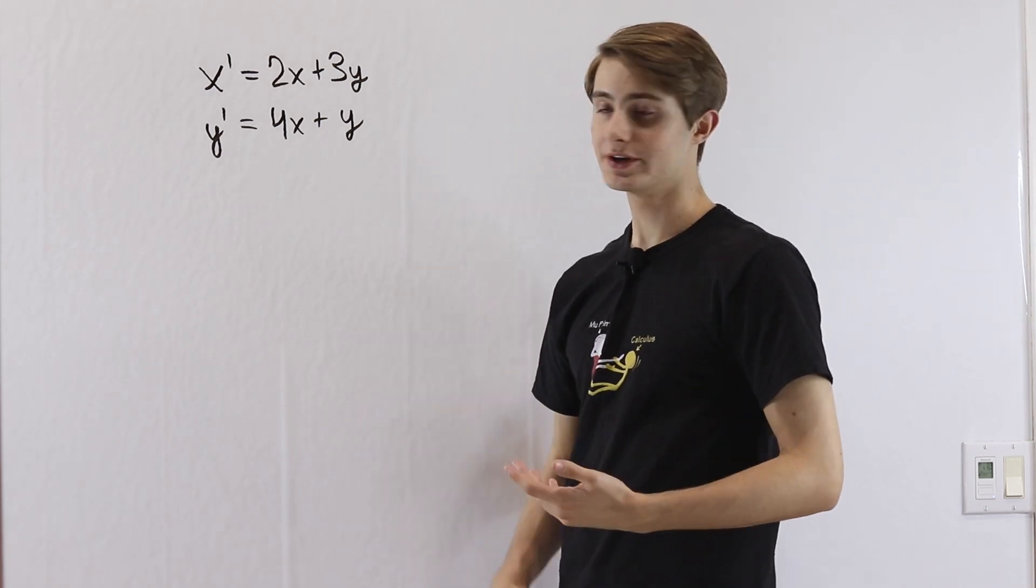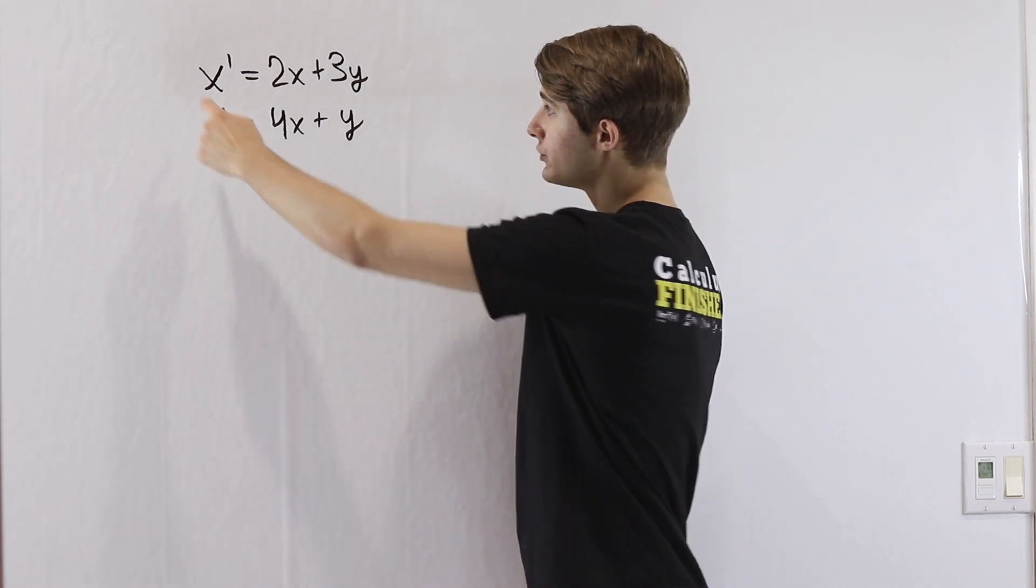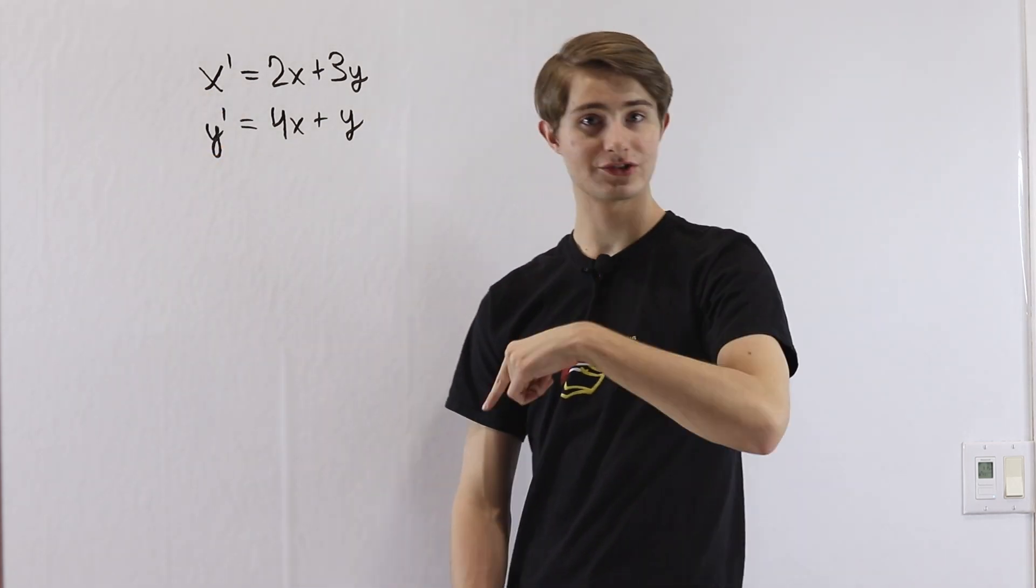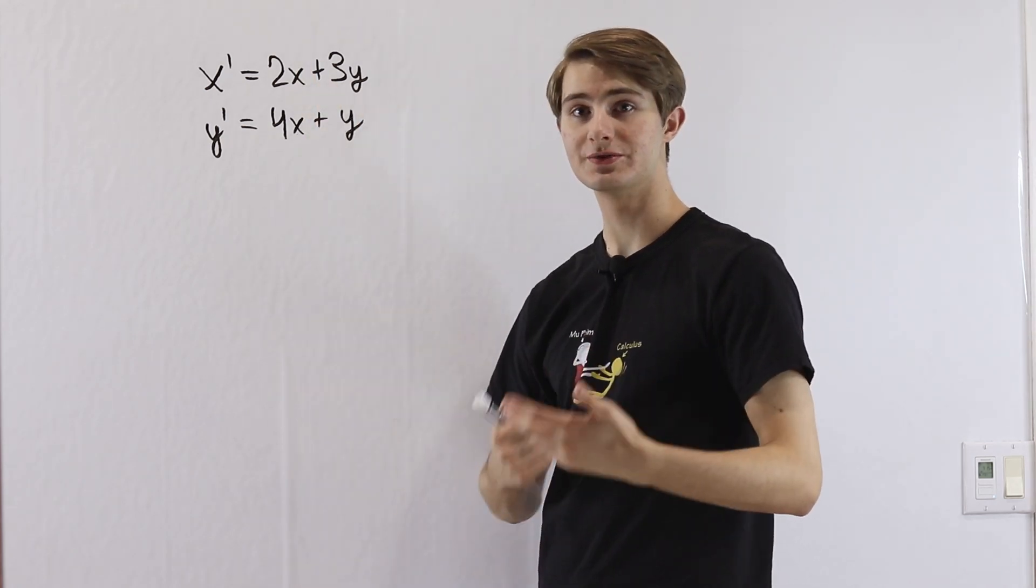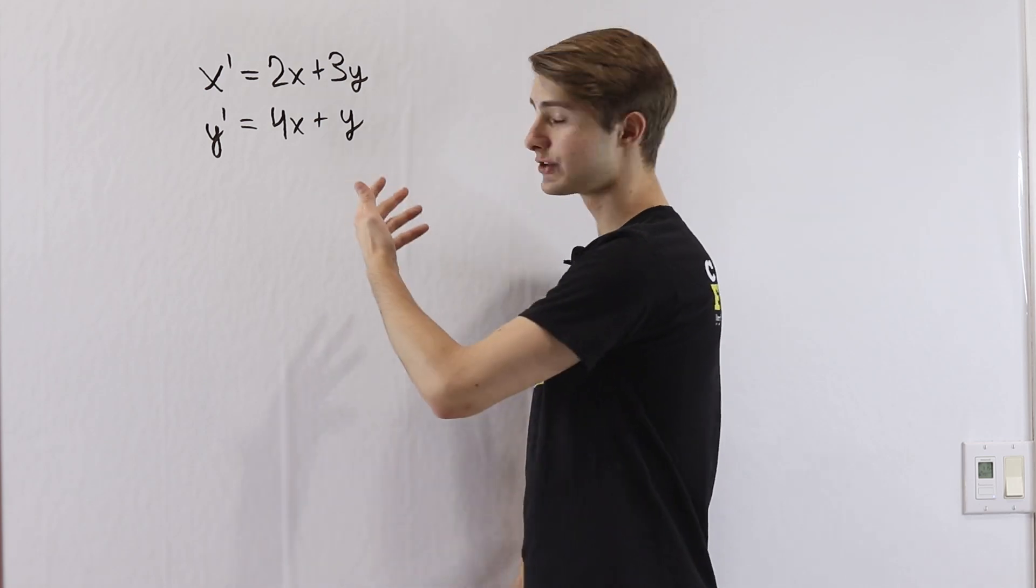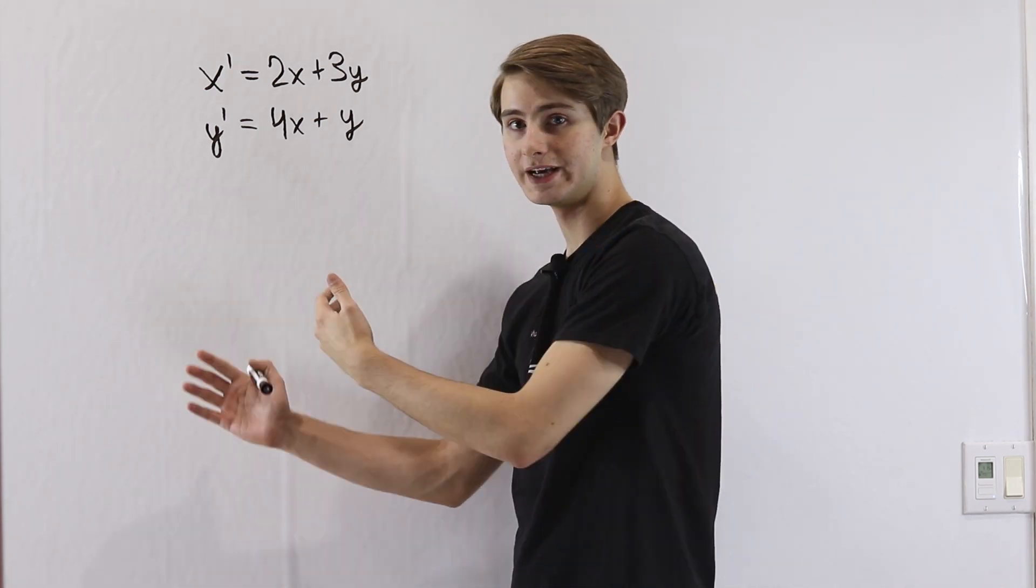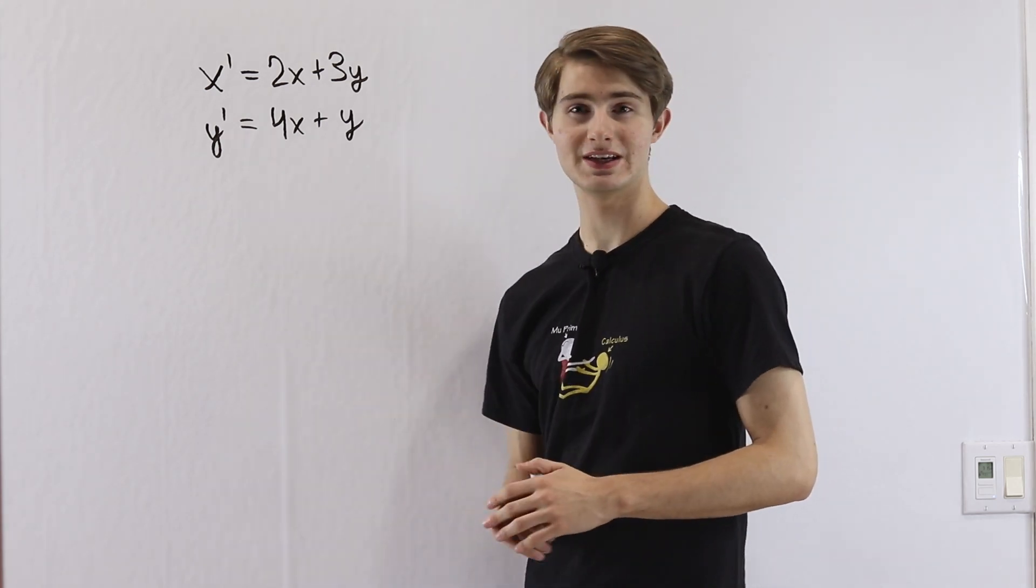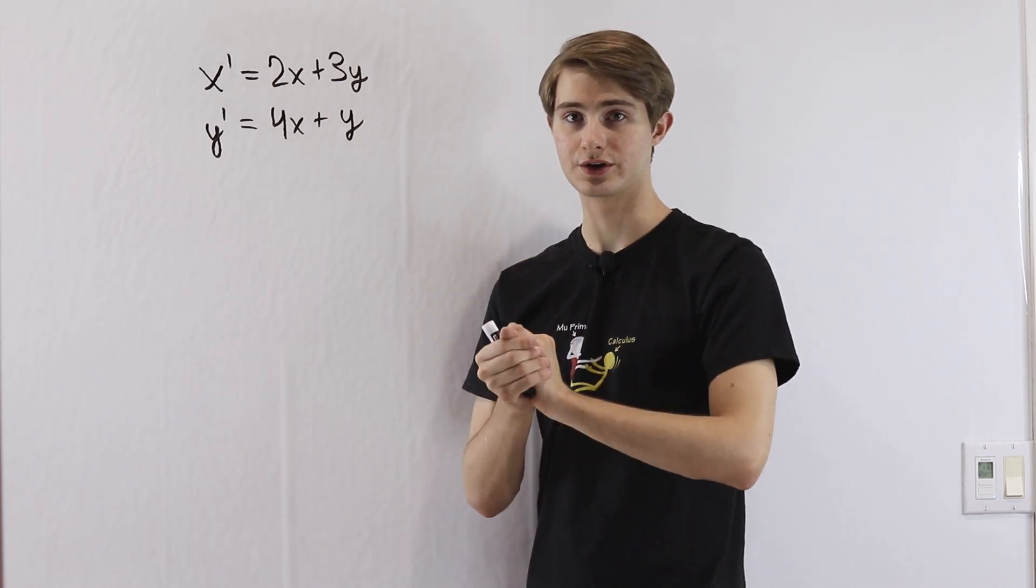Now the first thing to notice is obviously this is a system of differential equations. So we have two different dependent variables. x and y are both going to depend on something else like t, and we want to solve for x and y in terms of t. In order to do that we want to start looking at this equation and thinking about what it reminds us of. What does this sort of look like that might allow us to simplify the equation down? Because dealing with two equations at the same time is kind of hard. So we maybe want to try to compress it into one equation.